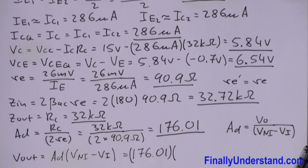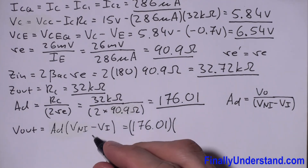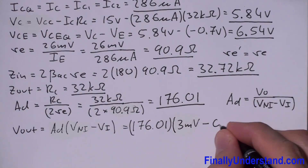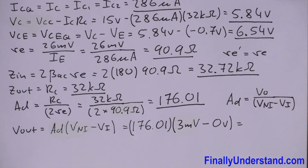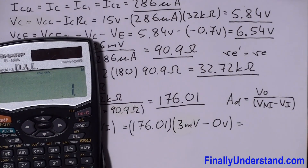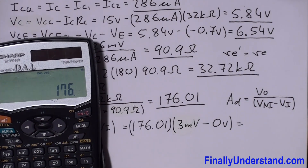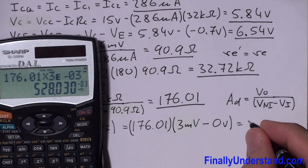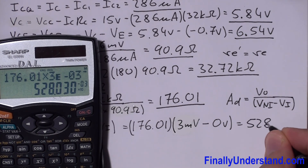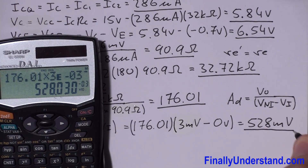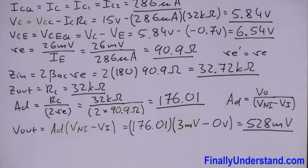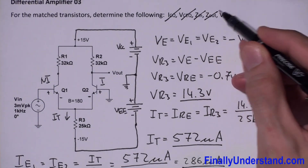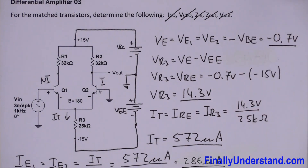So the differential input voltage is 3 millivolts minus 0 volts. Vout equals AD times the differential input voltage: 176.01 times 3×10⁻³ equals 528 millivolts. This is our output voltage. We have now found ICQ, VCEQ, Zin, Zout, and Vout — the problem is solved.